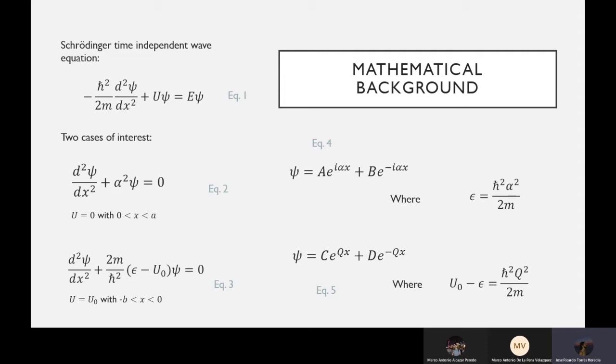Each one of those comes with its own implications. For example, in equation 4, it comes with the implication that the energy epsilon is going to have to be h-bar squared times alpha squared divided by 2m. And for equation 5, since we're going to have to take into account u sub 0, which is no longer 0, it's a slight different variation of this.